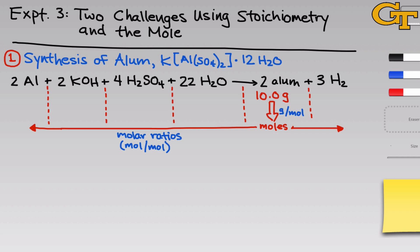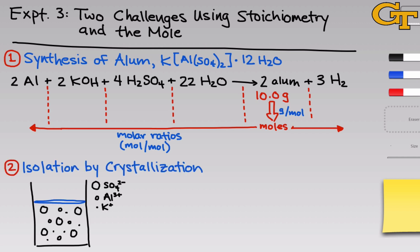After mixing up all of the reactants and letting the reaction sit for a time, we'll end up with a solution of aluminum ions, potassium ions, and sulfate ions. And the question arises, how do we isolate the solid alum product from this solution? The technique we'll use in this experiment is called crystallization, and it's an extremely common and extremely useful technique for separating solids out of a liquid solution.